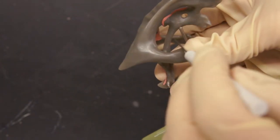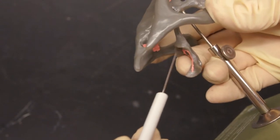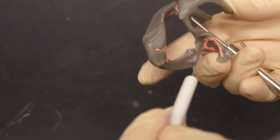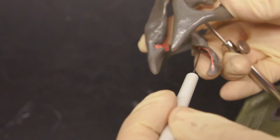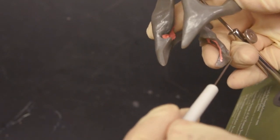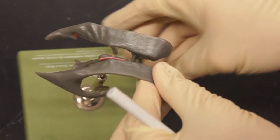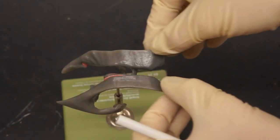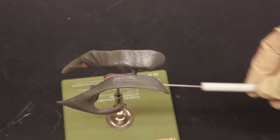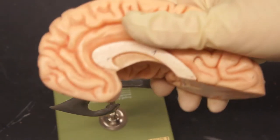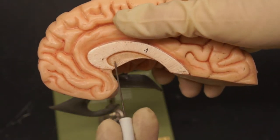This pink stuff is choroid plexus. Then we have the aqueduct of midbrain, going right here from the third ventricle to the fourth ventricle, which is right here. This guy is the fourth ventricle. That continues on to the central canal. And dividing these two ventricles up here, the two lateral ventricles, is the septum pellucidum. That can be seen on this model, right here.